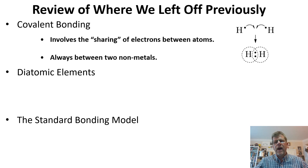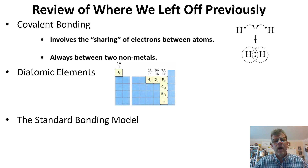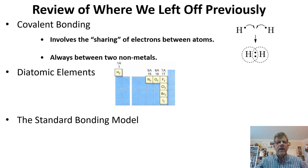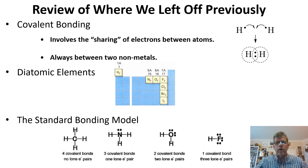We had gone with hydrogen to start us out on a journey looking at diatomic elements. We find that there are seven diatomic elements in the periodic table, and we had talked about the bond structure for each. We introduced the standard bonding model — if you forget everything else, remember this: carbon has four covalent bonds around it, no lone electron pairs.